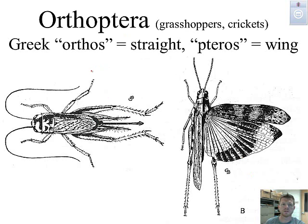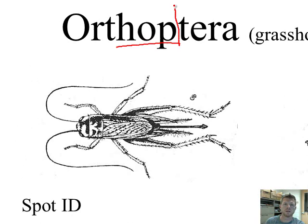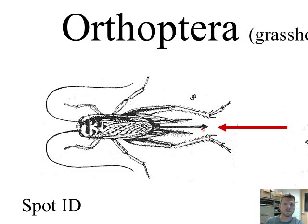Orthoptera: grasshoppers, crickets, and also some katydids. 'Orthos' refers to straight wing, and 'pteron' means wing. You can see as the grasshopper extends its wing, it is fairly straight — that's where we get this Greek name. A dead giveaway is those jumping legs. We look at crickets, grasshoppers, and katydids and always want to see those jumping legs. Also, 'hop' is right in the middle of the word grasshopper, which helps us remember them. Sometimes there will be an ovipositor on the females, especially female crickets — a structure used for laying eggs.